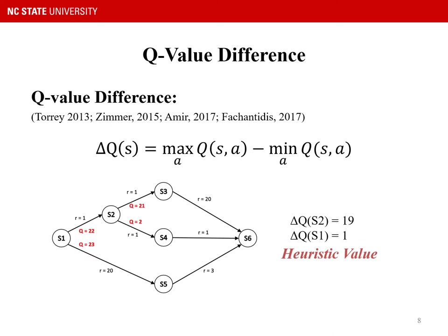A lot of research has applied Q value difference as a heuristic value to measure the importance of a state. The Q value difference is defined as the maximum Q value minus the minimum Q value for a given state. For example, in this graph, the Q value difference for state S2 is 19, while the Q value difference for state S1 is just 1. Obviously, state S2 is more important because if you take a wrong action on S2, you will lose 19 rewards. However, Q value difference only considers long-term rewards but ignores short-term benefits.